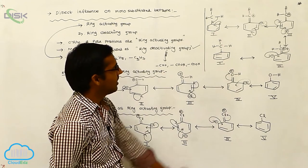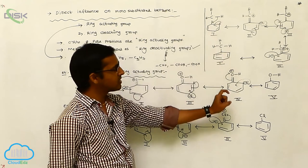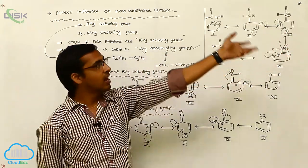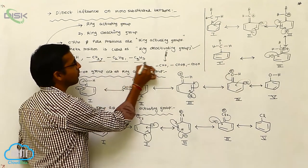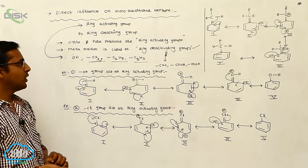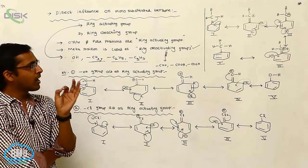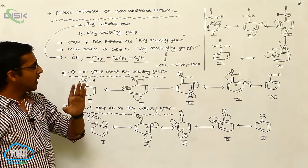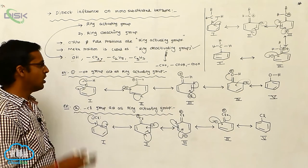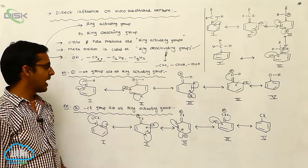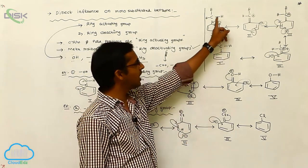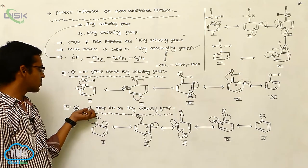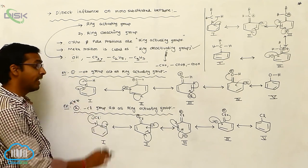Whenever an electron-donating group is present on benzene, electron density increases at the ortho and para positions. Electron-donating groups such as methyl, ethyl, propyl, butyl, and pentyl all increase density at ortho and para positions, making the product form preferentially at those positions. Therefore, electron-donating groups act as ring-activating groups. The three examples discussed are: OH group, chlorine group, and methyl group (toluene), all acting as ring-activating groups. Note that chlorine can also act as a ring-deactivating group in certain contexts.